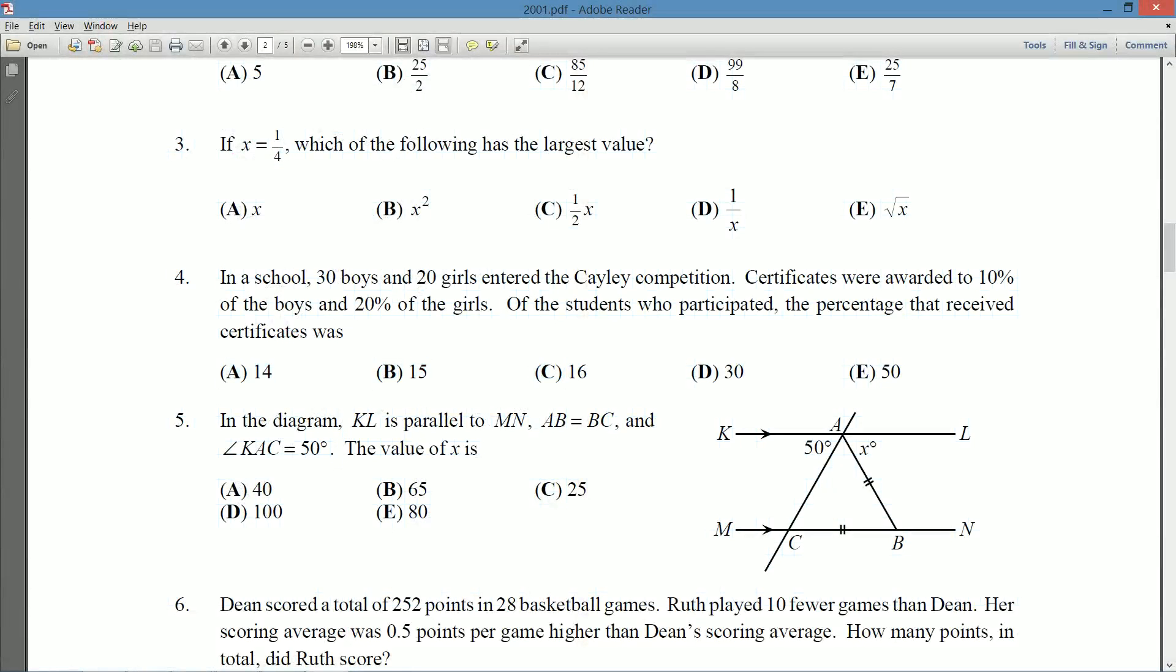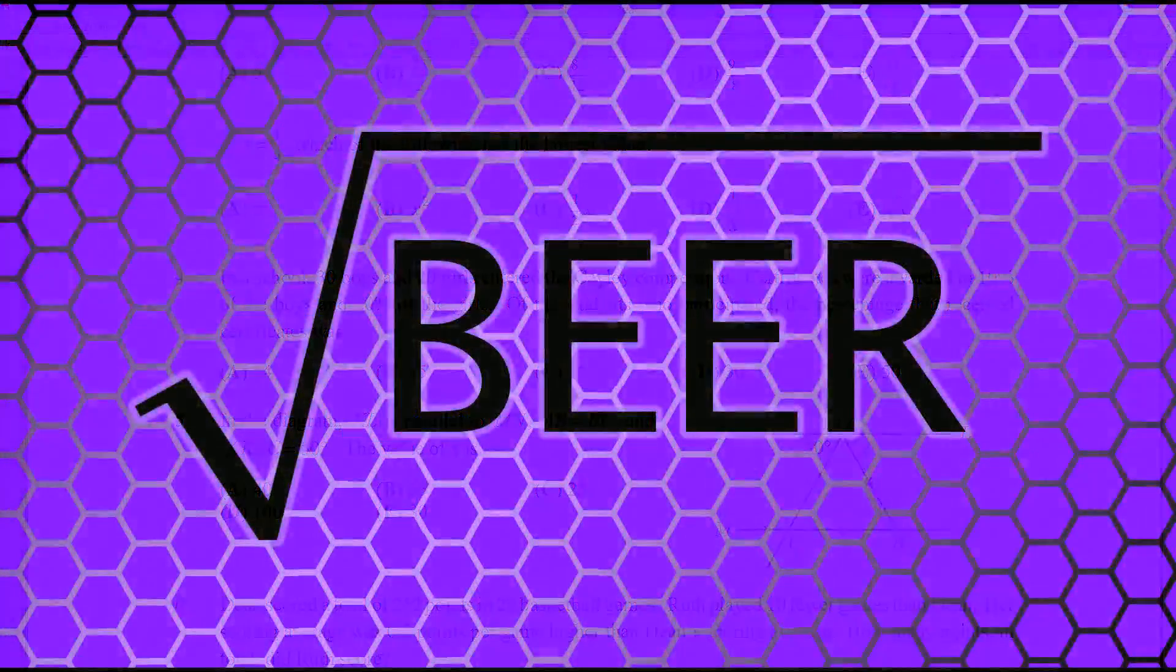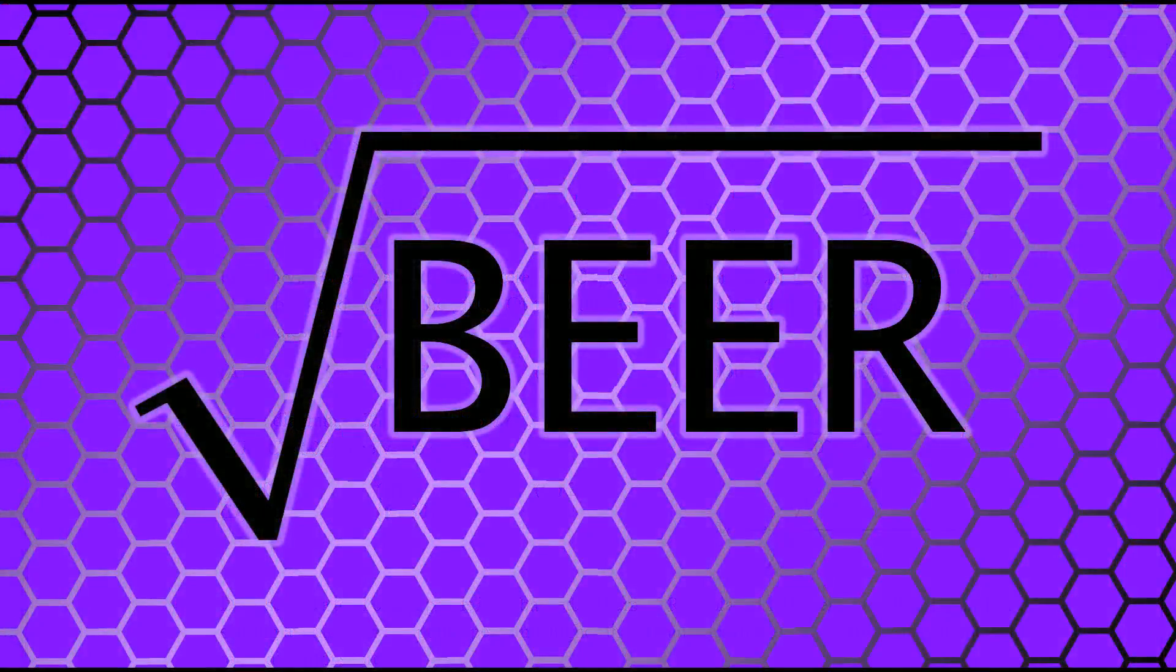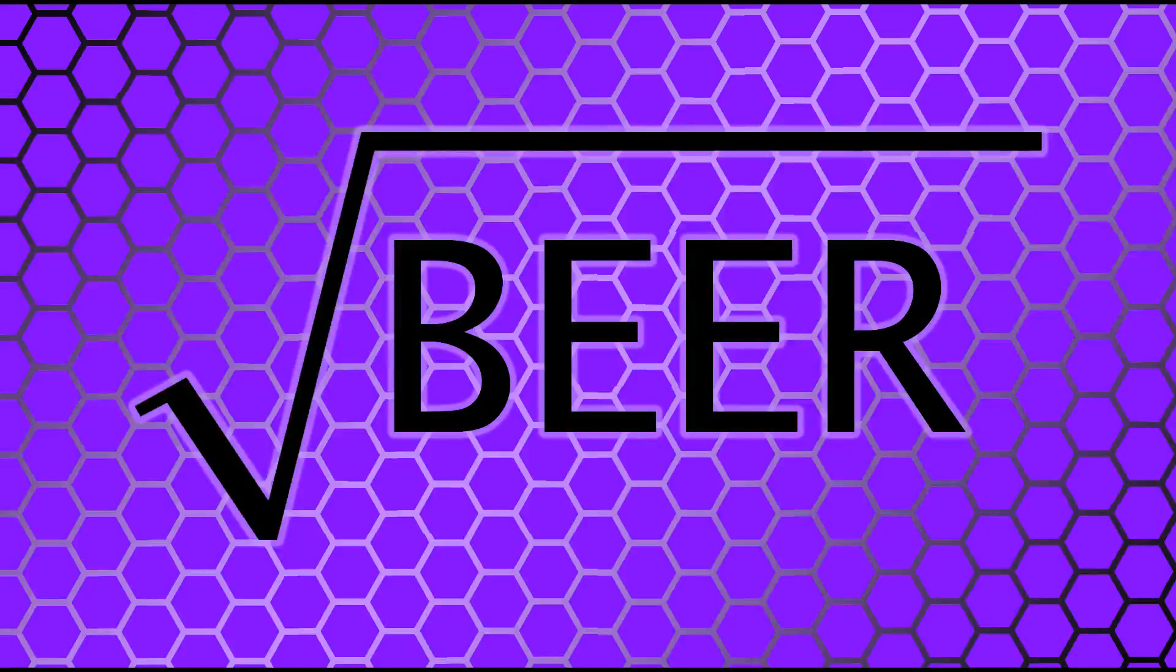30 and 50, we could have written those off right away. There are way too many students getting certificates in those answers. All right. So that was question number four on the 2001 Cayley. Stand by for question number five, which we'll do in another video.